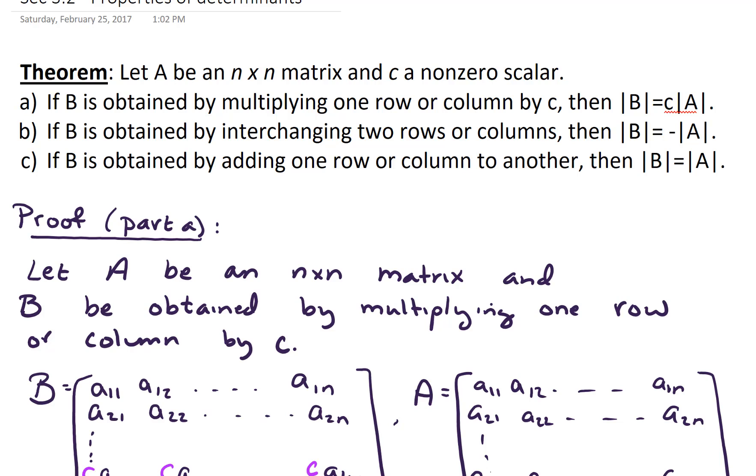If B is obtained by multiplying one row or column by C, then the determinant of B equals C times the determinant of A. Next, if B is obtained by interchanging two rows or columns, then the determinant of B equals negative 1 times the determinant of A. Lastly, if B is obtained by adding one row or column to another, then the determinant of B equals the determinant of A.